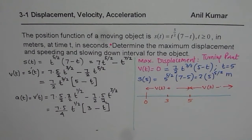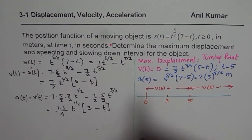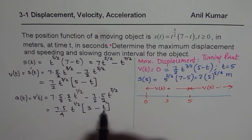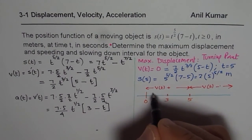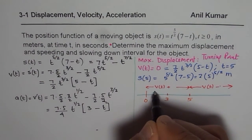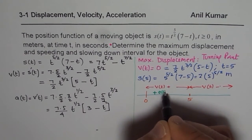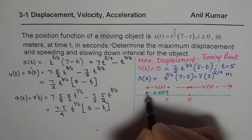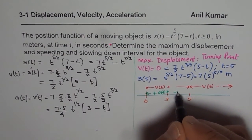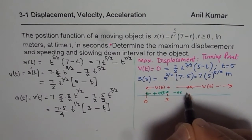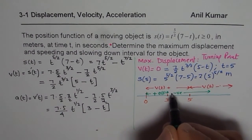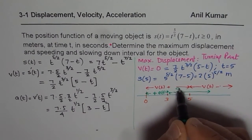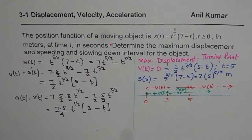For the acceleration: a(t) is positive when t < 3, and negative when t > 3. Specifically, acceleration is positive on (0, 3) and negative on (3, ∞).